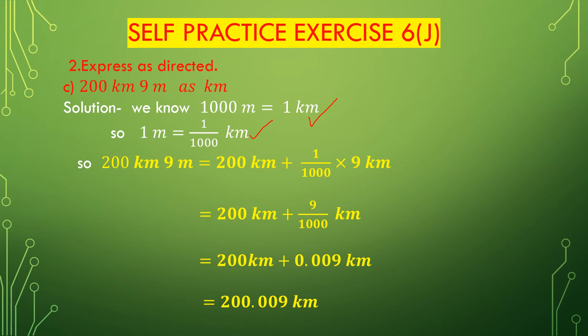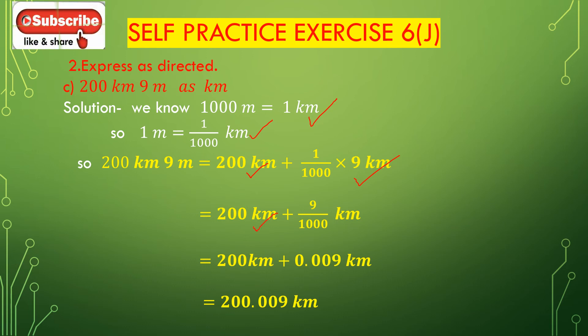200 kilometers 9 meters will be 200 kilometers — which is already in kilometers, so we don't need to convert it — plus 9 meters. We have to convert the 9 meters into kilometers. 9 meters will be 1/1000 × 9 kilometers. So, 200 kilometers plus 9 divided by 1000 kilometers.